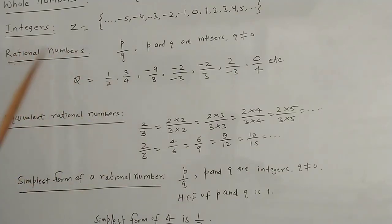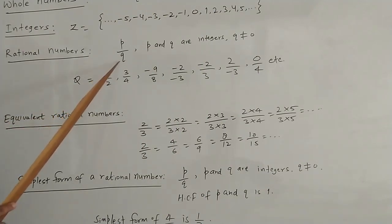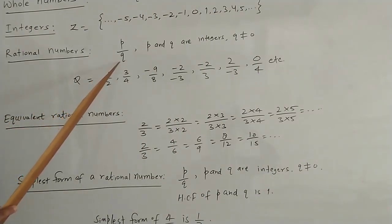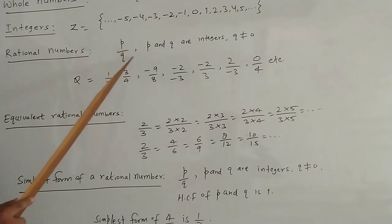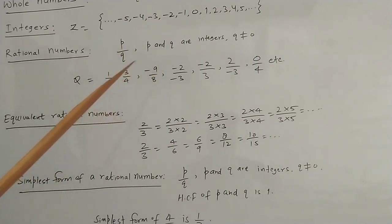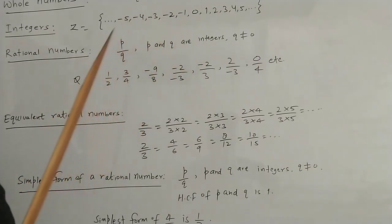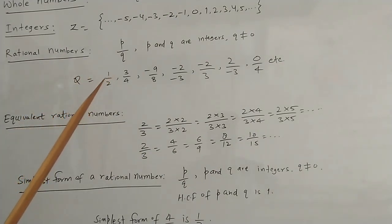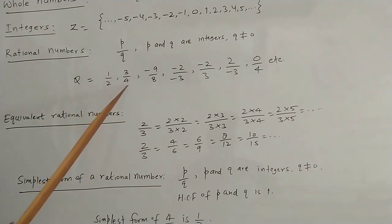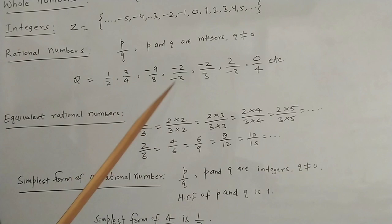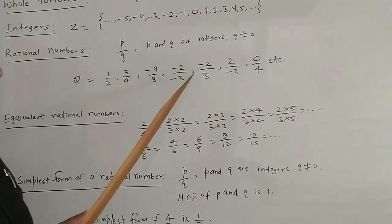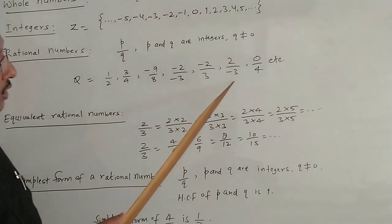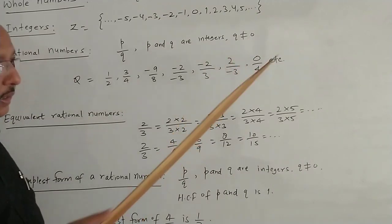Now come rational numbers. Rational numbers are numbers of the form P upon Q, where P and Q are integers and Q is not equal to 0. Examples of rational numbers are: 1/2, 3/4, -9/8, -2/-3, -2/3, 2/-3, 0/4, and so on.